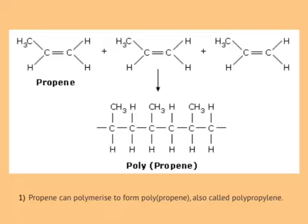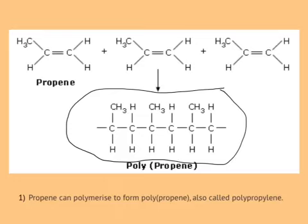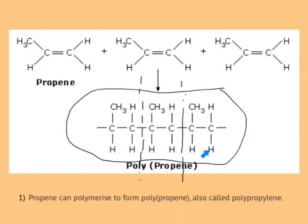For the exam you need to be able to spot which monomer has been used to make a polymer. If given a polymer structure, find the repeating unit by spotting the pattern. Breaking the chain up, you can see there are three repeating units in this polymer. By removing the connecting bonds and forming a new double bond, you end up with one propene molecule.